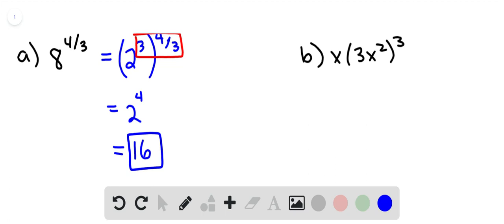For part b, we're going to raise 3x squared to the 3rd power by raising each of those factors to the 3rd power. So we have our x, and then we have 3 to the 3rd power, and then we have x squared to the 3rd power.